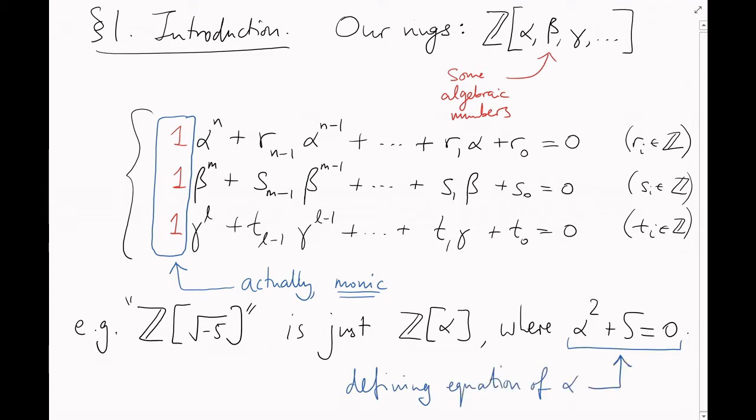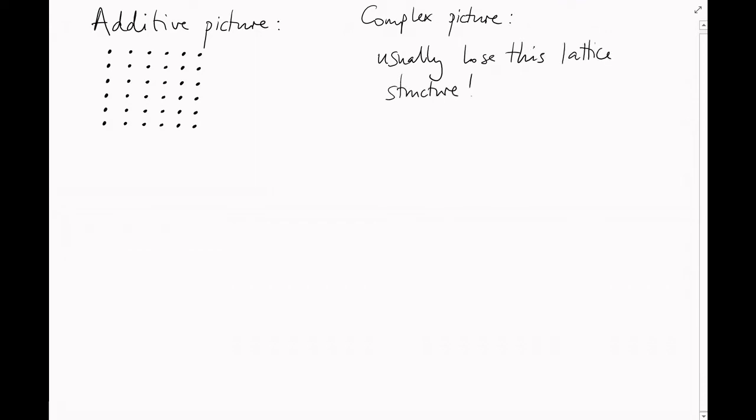Now, we've often thought about rings purely additively. I've told you that we always get to draw a lattice in cases like this. You can try to think of these rings as subsets of the complex plane, where you can see their multiplicative structure more clearly, but you'll usually lose the lattice picture.